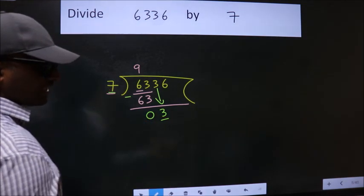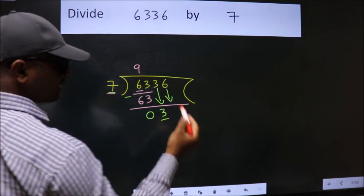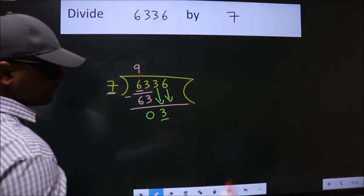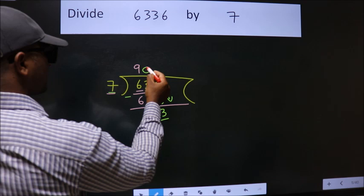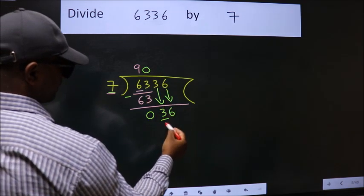So we should bring down the second number. And the rule to bring down the second number is put 0 here. Then only we can bring down this number. So 36.